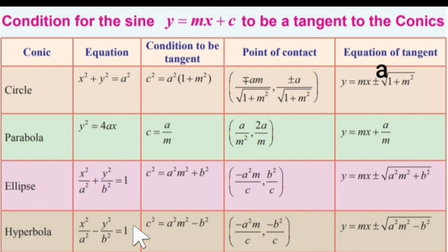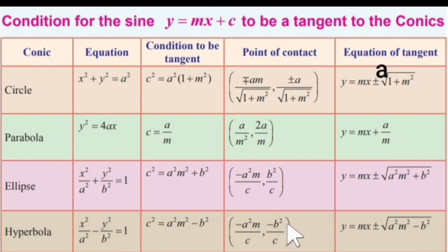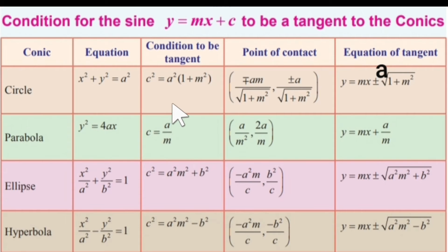For the hyperbola, with equation x square by a square minus y square by b square equal to 1, the condition for tangency has a slight change from ellipse — here plus becomes minus. The point of contact also differs. The equation of the tangent is y equal to mx plus or minus root of a square m square minus b square. A straight line is tangent to a given conic only if it satisfies that conic's specific condition for tangency.